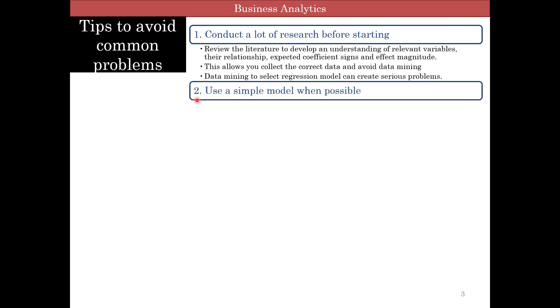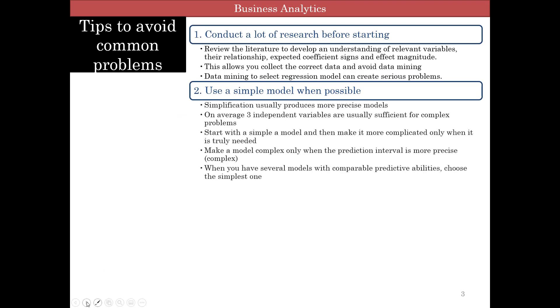The second tip is to use the simplest possible model. Use the simple model when possible. Simplification usually produces more precise models. Now this is a rough rule of thumb, so use it as guidance, not as a rule. An average three independent variables is usually sufficient for complex problems. Start with a simple model, then make it more complicated only when it's needed.